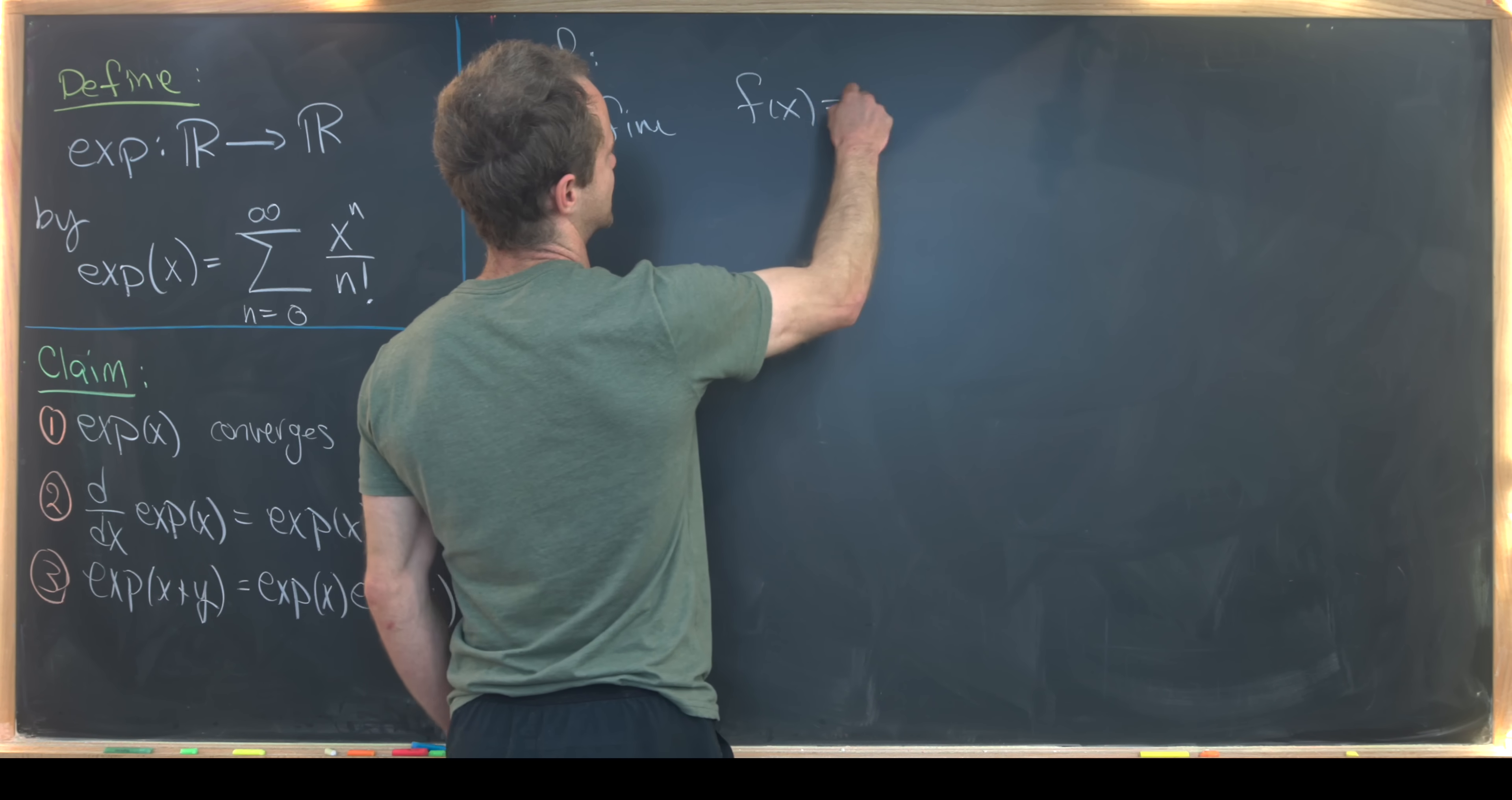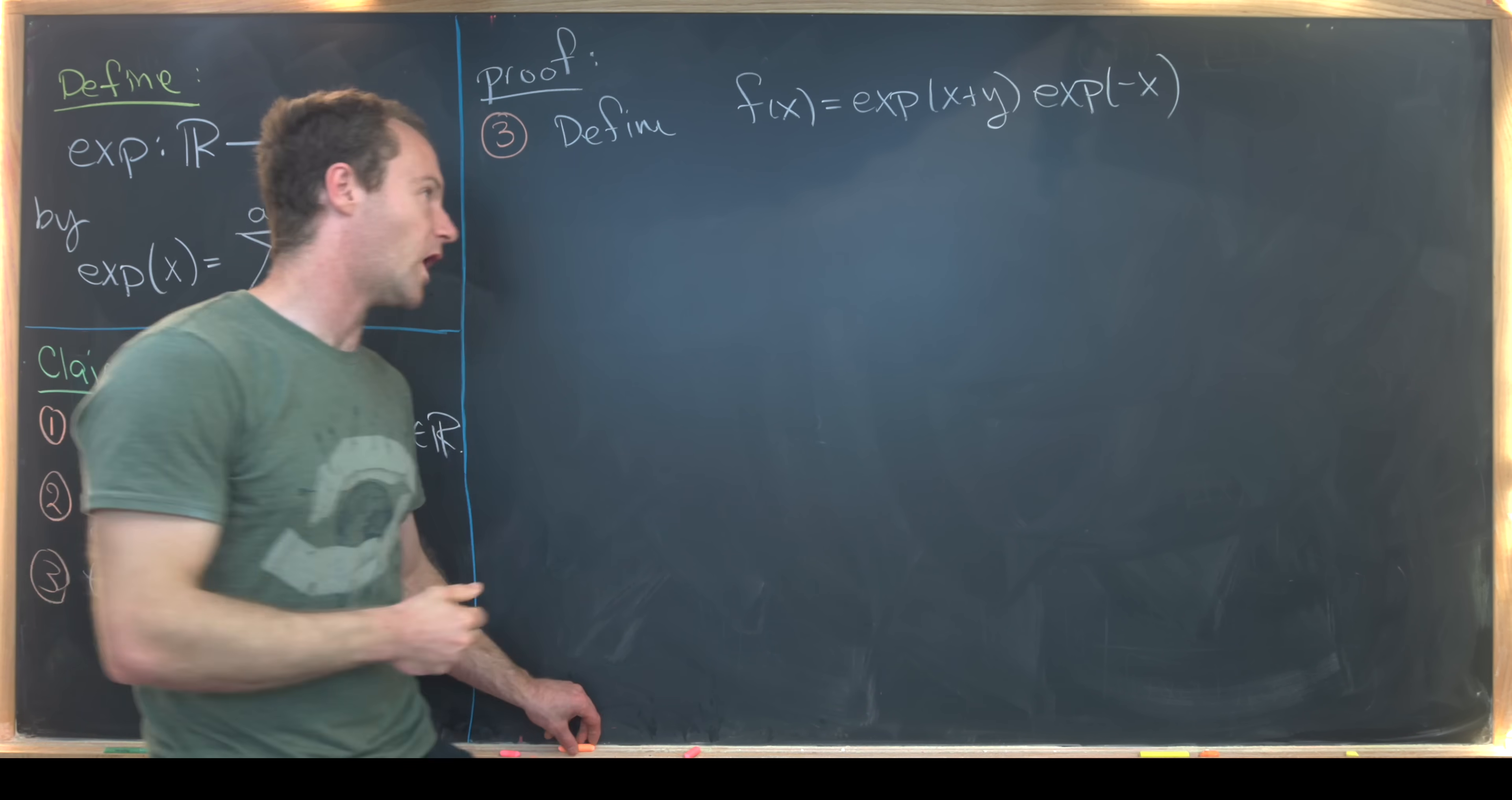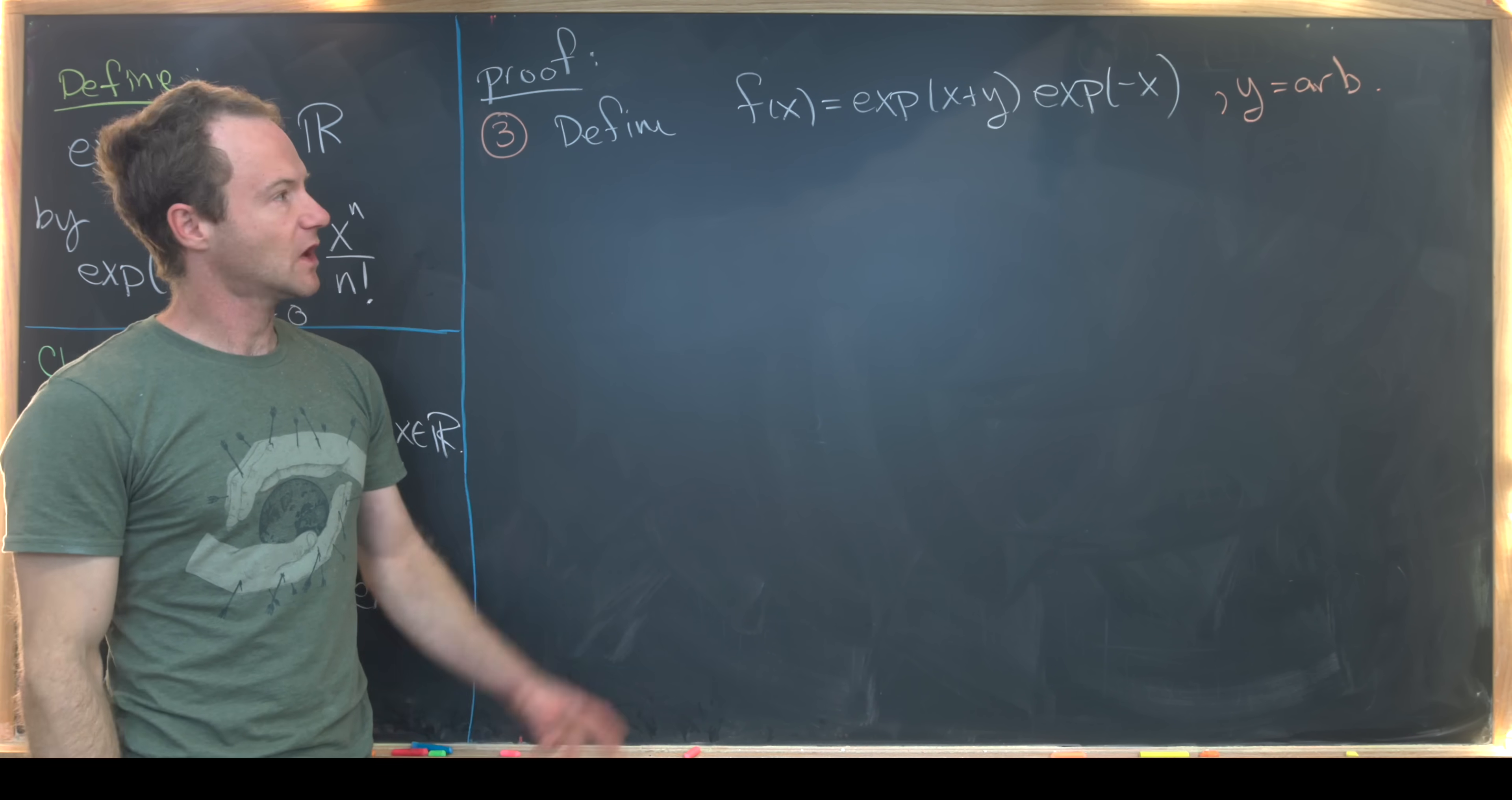So let's start by defining a new function. And I'll call it f(x) just kind of for ease of use. And this is going to be exp(x+y) times exp(-x), like that. And here, y is fixed but arbitrary. So I'll just say y is arbitrary, but it's not a variable in the game of this function. x is the variable.